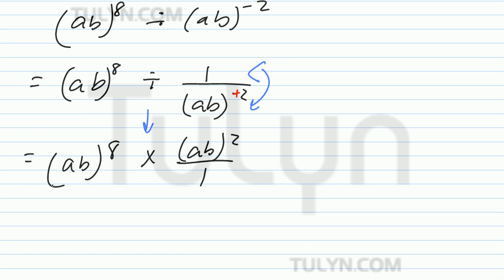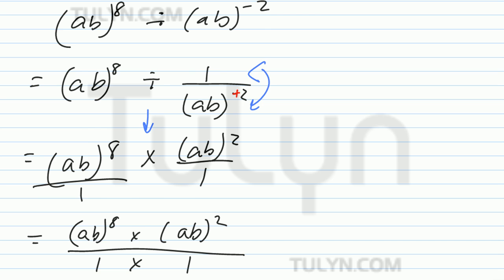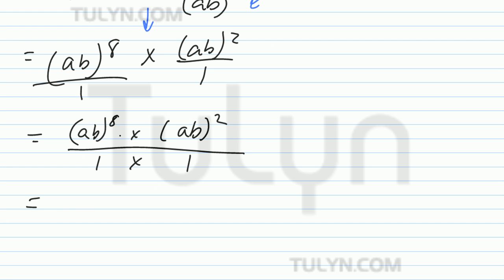And then this is really over 1, so go ahead and multiply it across. Numerator of your first times numerator of your second fraction. Denominator of your first fraction times denominator of your second fraction. Ab times ab squared.